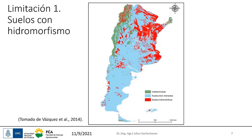Acá podemos ver la primera limitación: suelos con hidromorfismo. Todos estos suelos suelen estar en general en áreas deprimidas o con pobre drenaje, en áreas cóncavas. Sabemos escuchar mucho en la cuenca del Salado que tenemos los bajos salinos, los salinos sódicos. Esta es una limitación a nivel del país. Uno por ahí subestima algunas de estas limitaciones, principalmente porque en la Pampa Loésica no tienen tanta incidencia, pero hay otras zonas donde sí. Al cambiar de escala y mirarlo desde el punto de vista del país, son importantes.